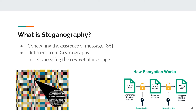So first, what is steganography? To put it simply, it's concealing the existence of a message from any third party that may be listening onto our channel. This is a key distinction from cryptography, as cryptography aims to just conceal the contents of the message, as shown with the encryption on the bottom right.